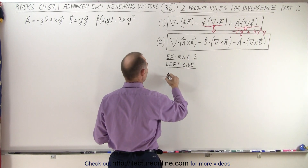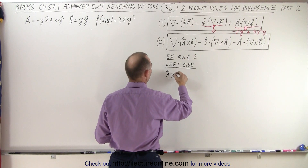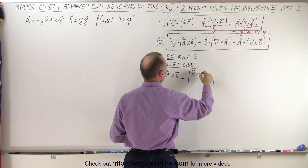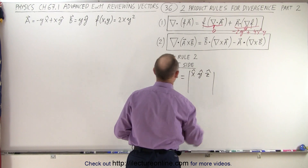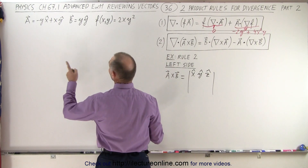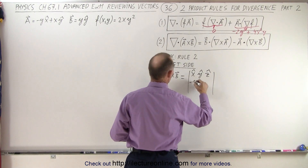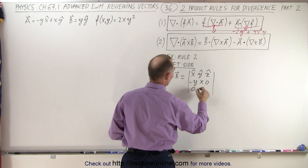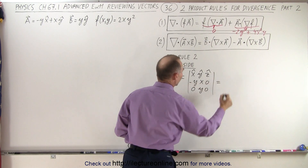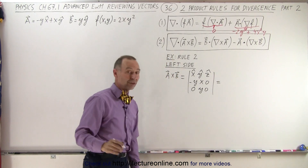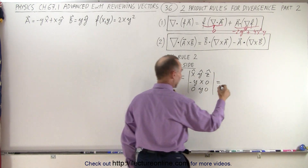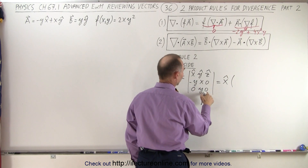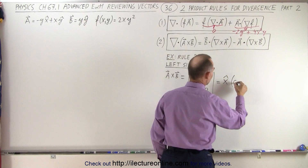A cross B is equal to — we need X, Y, and Z unit vectors. The components for A are minus Y, X, and 0. The components for B are 0, Y, and 0. That's a fairly easy cross product to work with — lots of zeros. X unit vector times X times 0 minus 0 times Y — that would be 0.